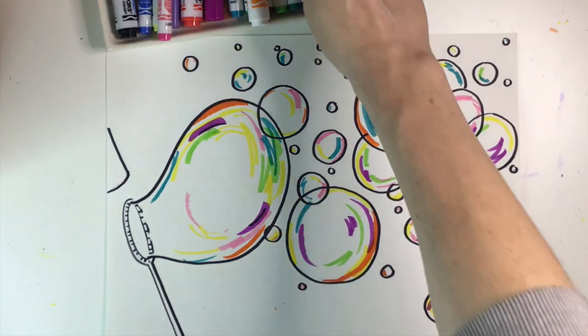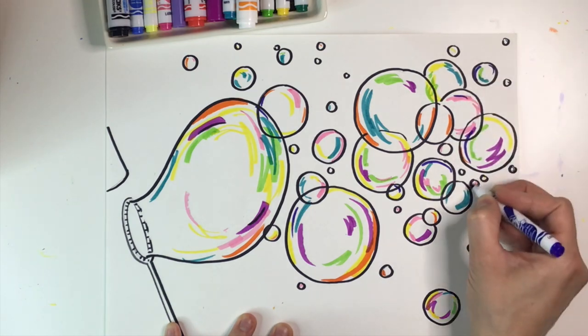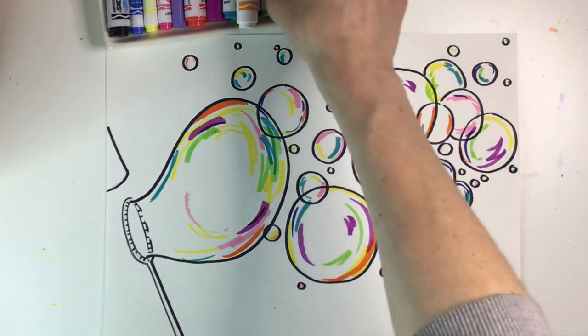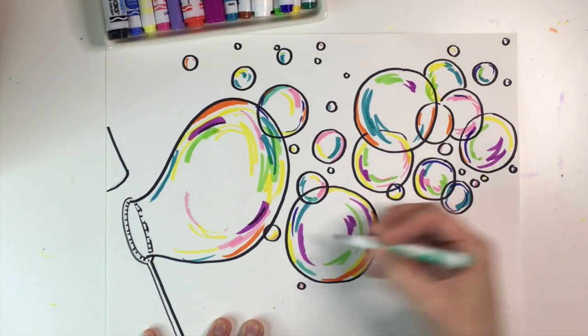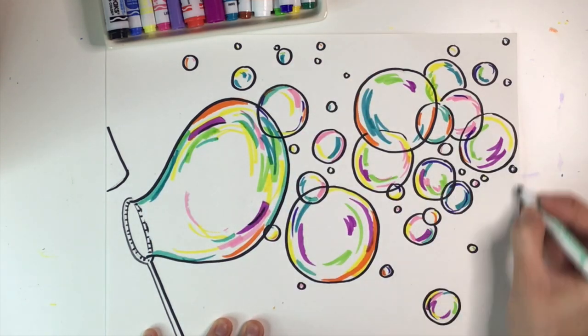Do you ever notice a rainbow in a bubble? A bubble gets its color from light waves reflecting between the soap's outer and inner surfaces. The distance between the layers gets smaller as the water evaporates, making the colors change.